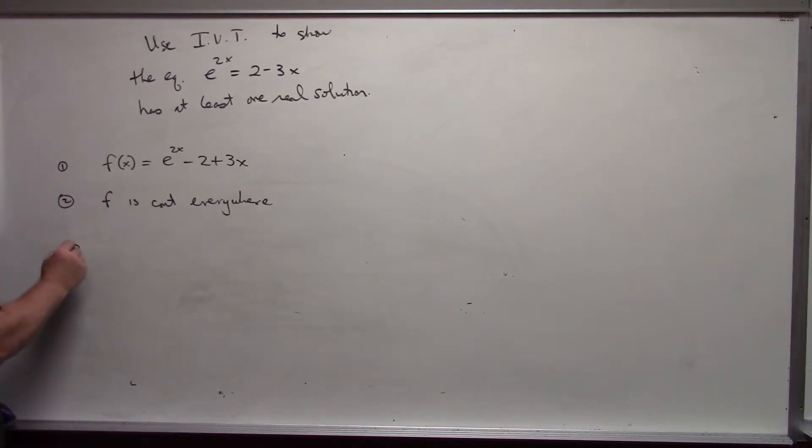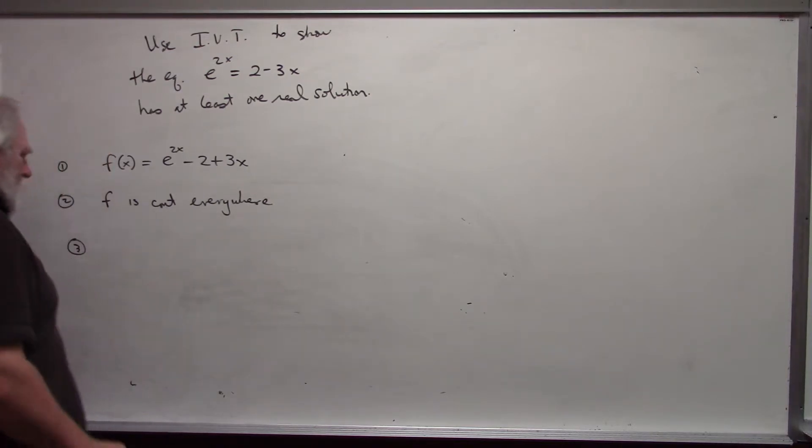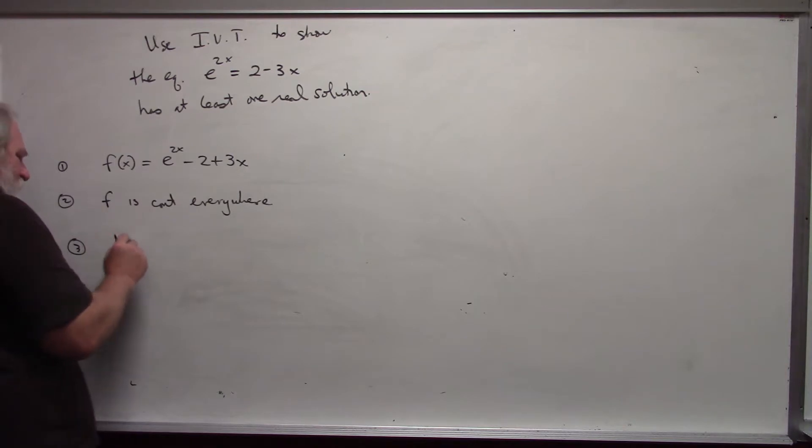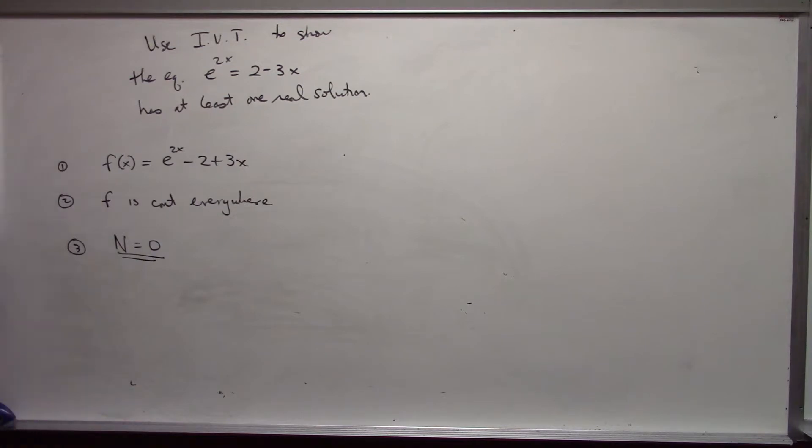Third, I need to find an a and a b. We will always use the value for n to be zero. And now I need an a and b so that when I put in any specific value for x as a, my functional value is either positive or negative. And when I put in b, it's the opposite. So if I put in the value for a, the result is positive, I want some value for b that the result is negative.